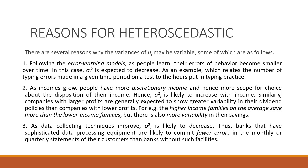Second, as income grows, people have more discretionary income. Those who have less income, their expenditure is less. As income increases, there may be more variation in expenditure. So sigma squared is likely to increase with income. Similarly, companies with large profits are generally expected to show greater variability in their dividend policy than companies with lower profits.